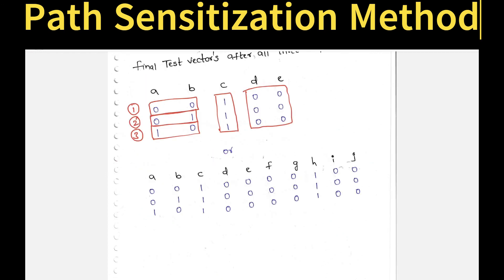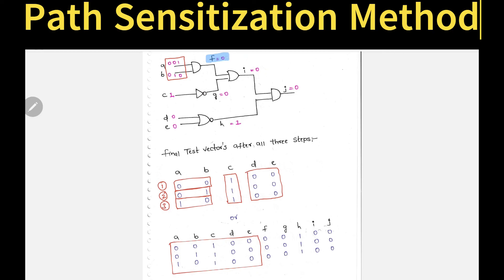If you want, you can also write the values for the remaining internal variables F through J. From the diagram: F equals 0, G equals 0, H equals 1, I equals 0, and J equals 0. The important final test vectors are defined by inputs A, B, C, D, and E. The internal node values are supplementary — filling them in is optional.